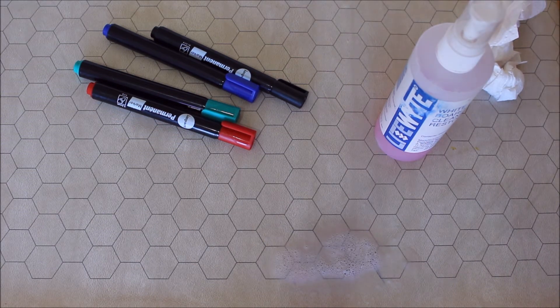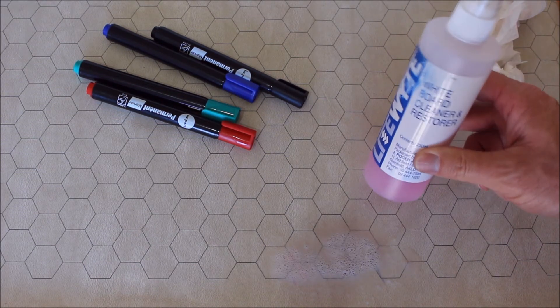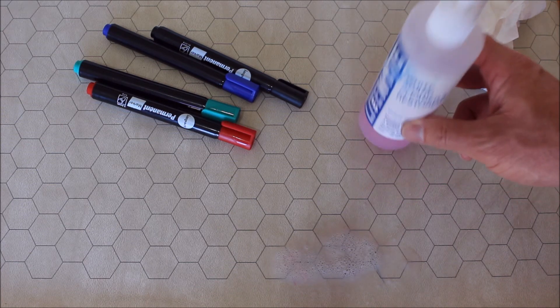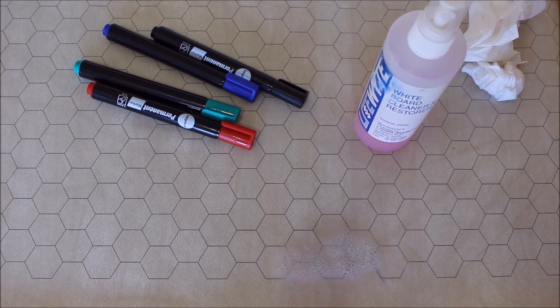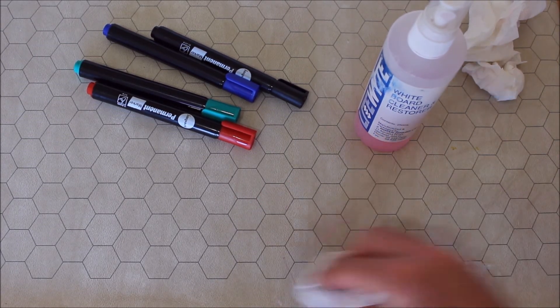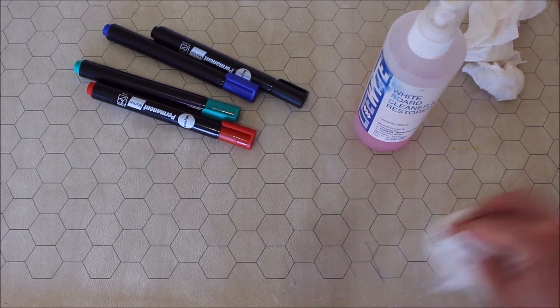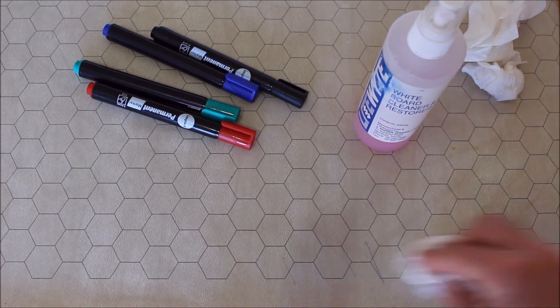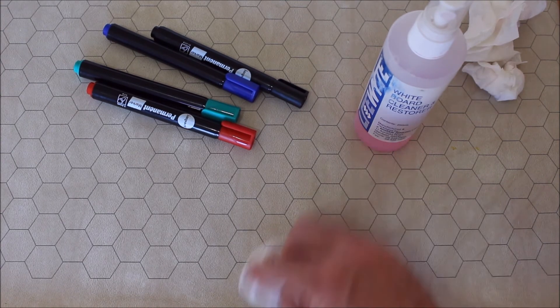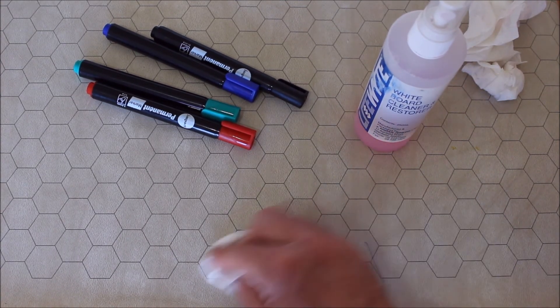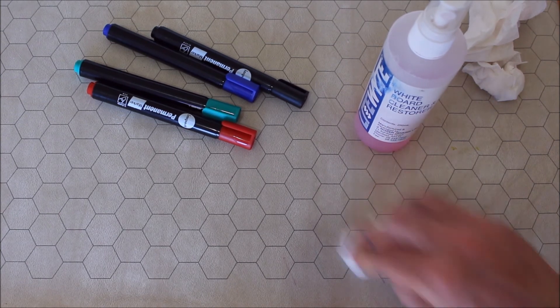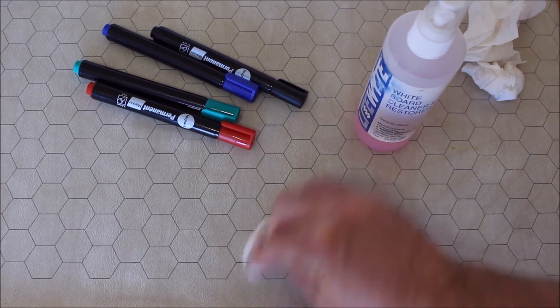Alright. I've left the isopropyl alcohol on here for about two minutes or just over two minutes. And now I'm going to wipe it off and see if it has any real effect because maybe I have to leave it on here longer. Well, I would say it has certainly made the marks reduce but it has not removed them. It hasn't damaged the grid on it or the mat itself but they have not actually come off completely. They are still there.